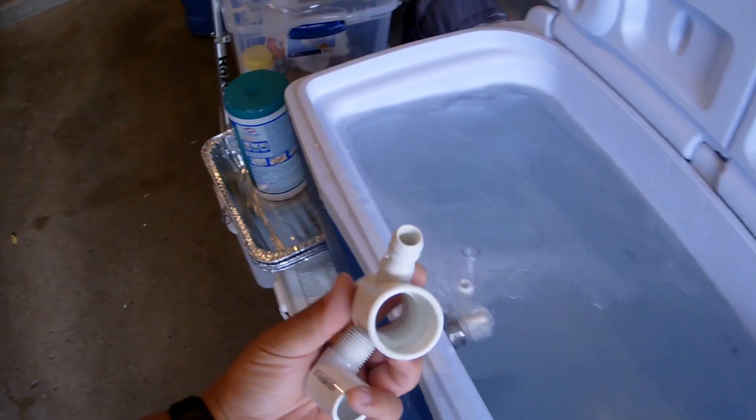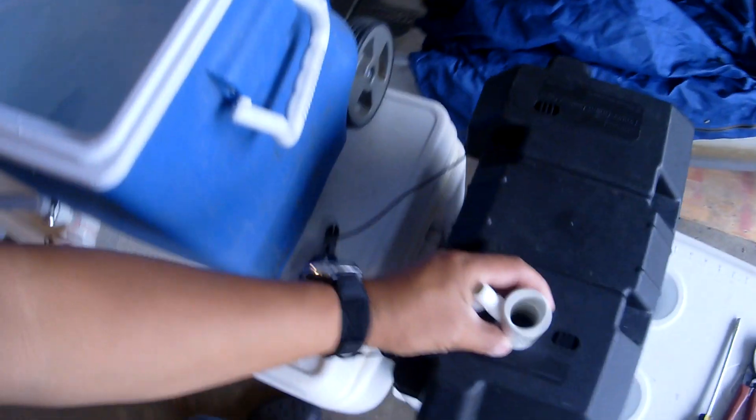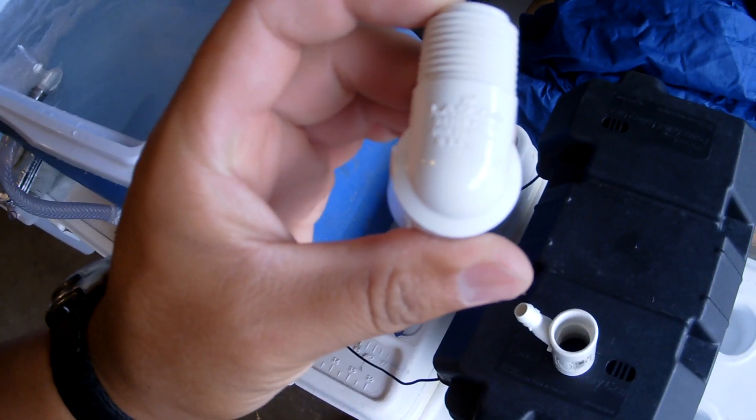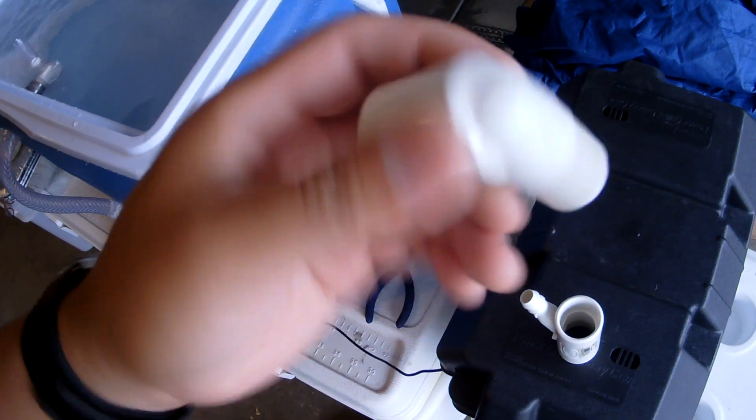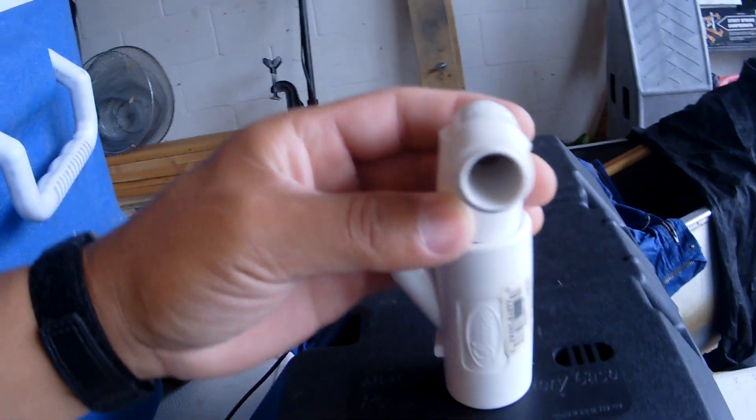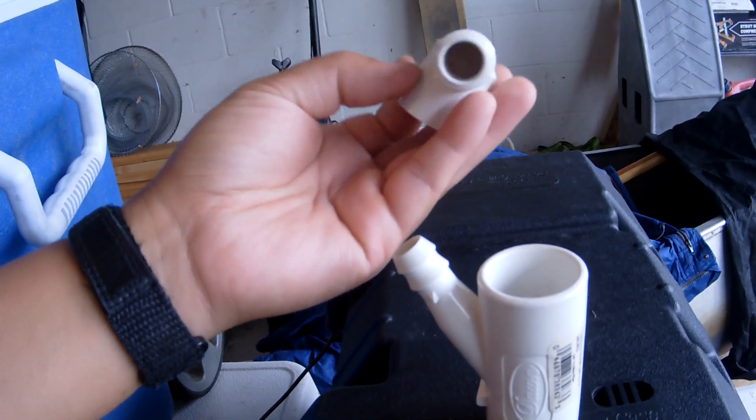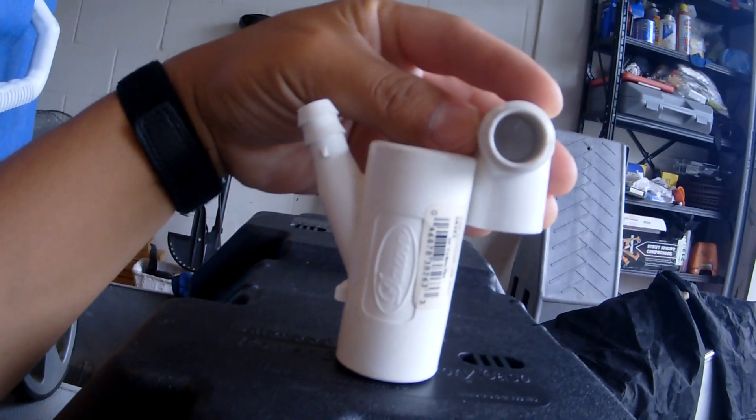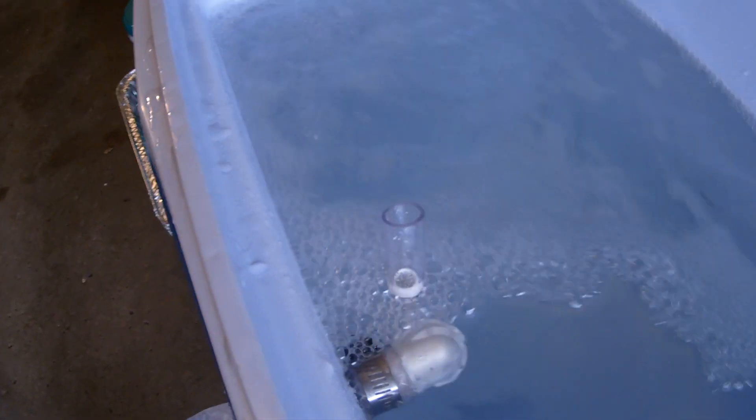So essentially what I did is I have this 90 degree bend, which is a smaller one. I don't remember what the size change is, but it fits this three-quarter hose I believe. And it almost fits in here, but I had to sand around the edge a little bit. And I have a bearing press which I just pressed it into the neck right there. And that's what you see in the water there.